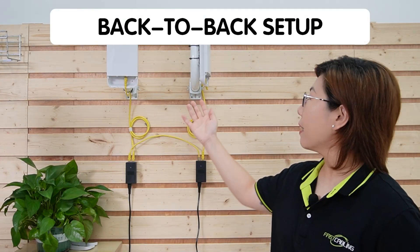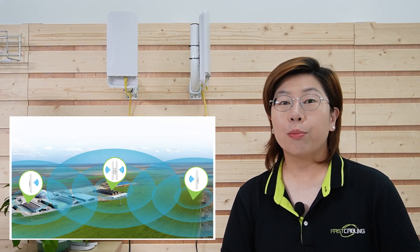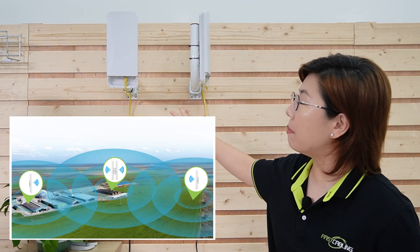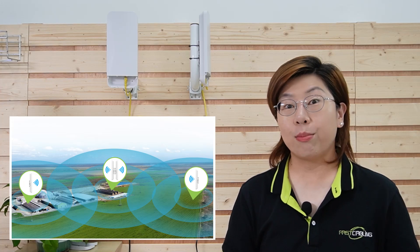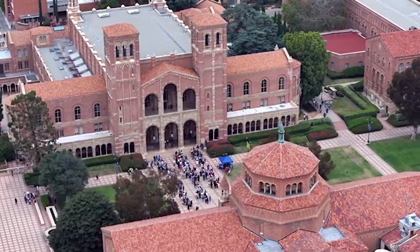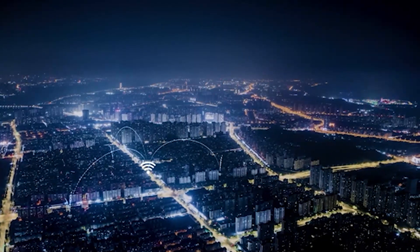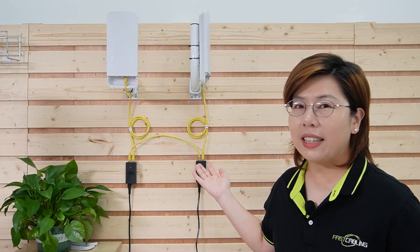This is where the back-to-back setup comes in handy. A back-to-back setup involves using two pairs of wireless network bridges — that makes four of them. Essentially, you place two bridges back-to-back at an intermediate point, which allows the signal to be transmitted from the source to the destination regardless of the angle. This method not only bypasses the angle limitation but also extends the range of your network. It's especially useful for connecting different buildings on a campus, linking remote areas in a large property, or even connecting different sites across a city, since our wireless network bridges can extend the range up to 5 kilometers.